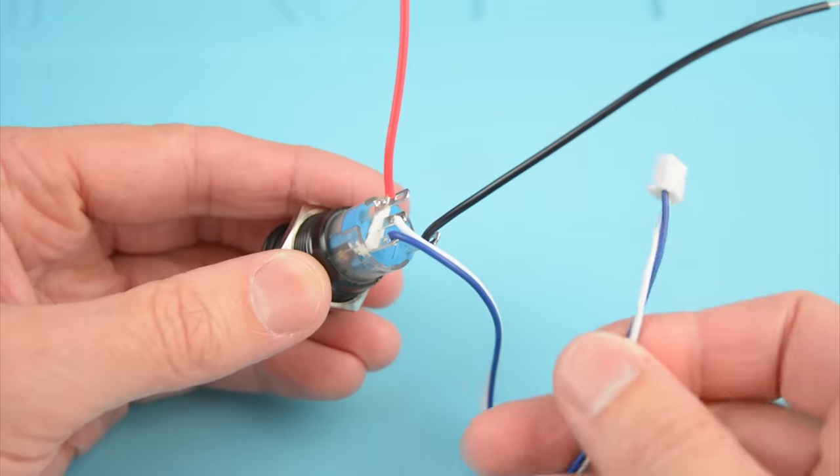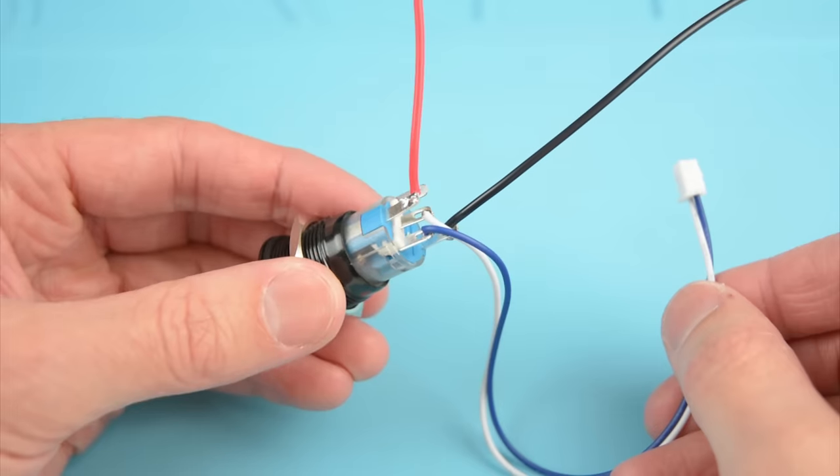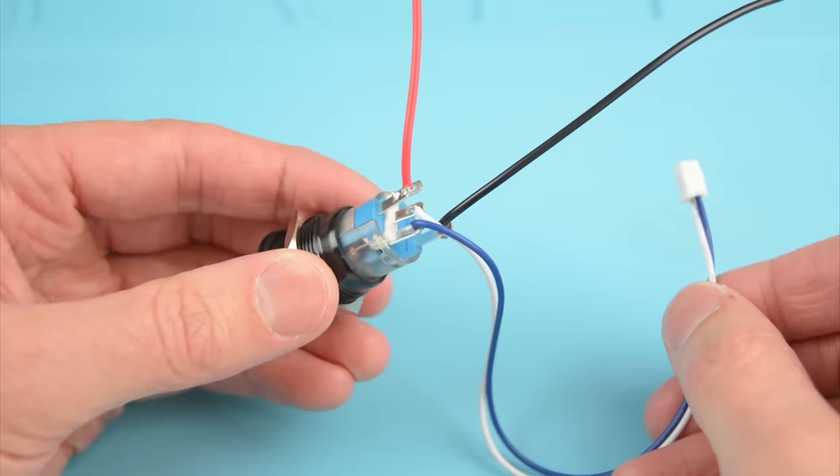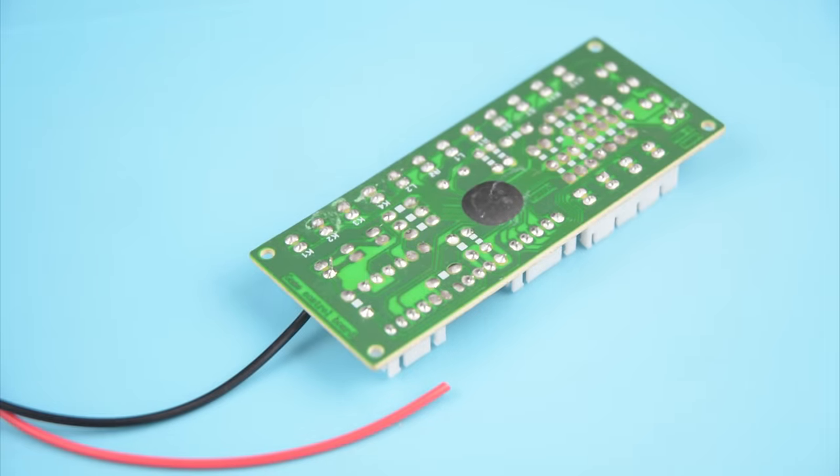Now we will have the red and black power wires prepared for the LED and the wires for the switch soldered in place. The next step is to solder the red and black wires for the LED to the power location on the USB encoder.